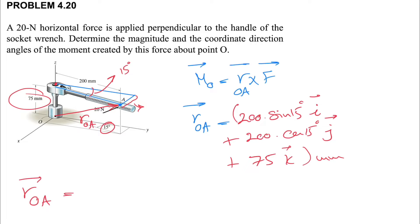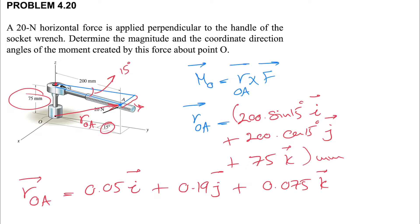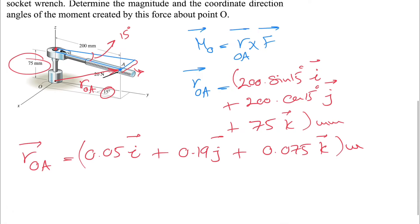The z component is simply 75 millimeters. All values are in millimeters, so dividing by 1000 to convert to meters gives us 0.05 i, 0.193 j, and 0.075 k meters. Now we have our r vector and the next step is finding the F vector.